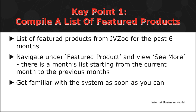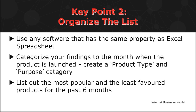Get familiar with the system as soon as you can. Next, organize the list using an Excel spreadsheet. Categorize your findings to their respective month where the products were launched. Then create another category in another column and categorize it accordingly as Software Program, a web-based app, graphics, or a hybrid product.